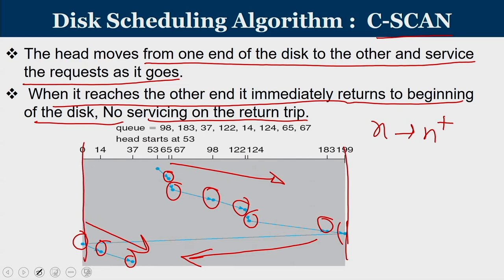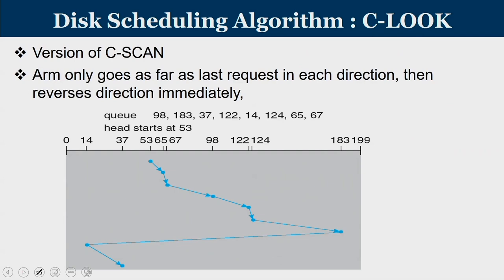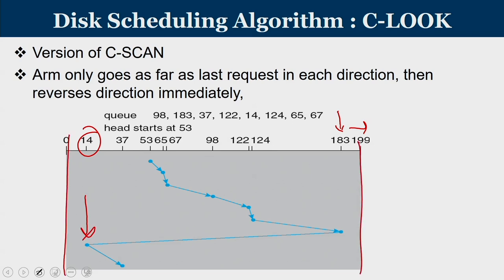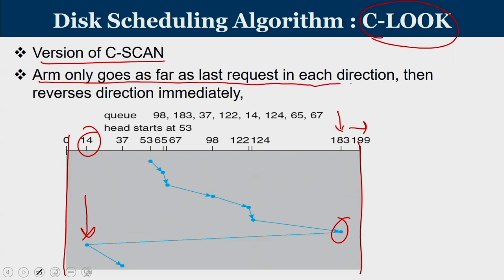A modification called CLOOK: rather than going all the way to the extreme (199), the arm only goes as far as the last request in each direction and then reverses immediately. So instead of going from 183 to 199, the arm stops at 183 and returns to the other extreme at 14. The arm only travels to locations where servicing is required — this is a modified version of SCAN.